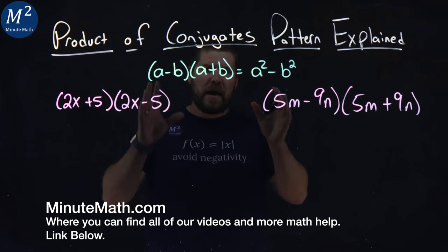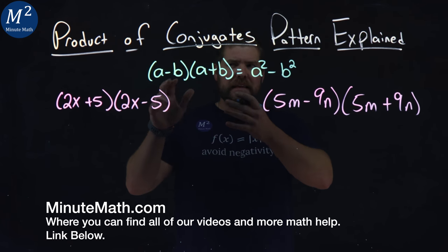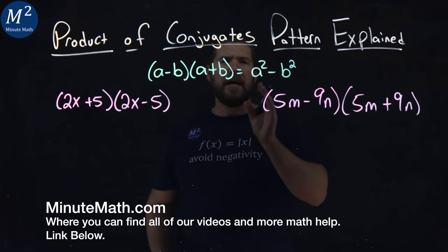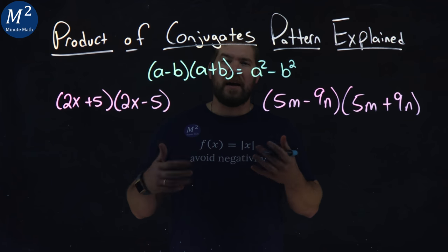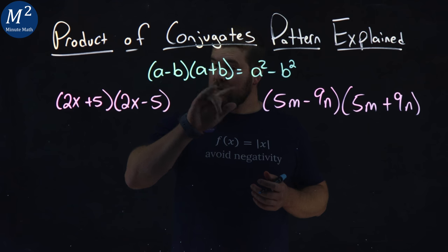We have this pattern here with these conjugates. They are basically this: A minus B times A plus B is equal to A squared minus B squared. You can think of the conjugate more like a complement. A minus B complements A plus B.